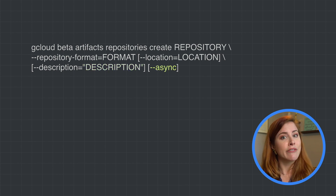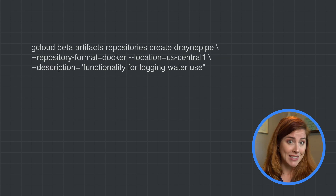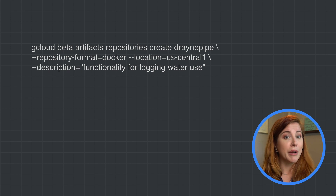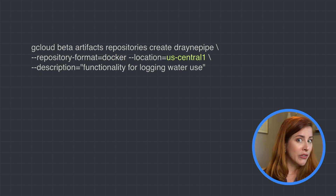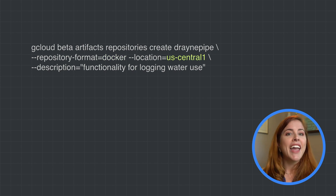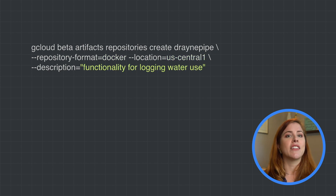Including the async flag causes the command to return immediately without waiting for the operation in progress to complete. For example, here's a command from my Drain app. My repository is called DrainPipe, it's a Docker container, the location I've chosen is US Central 1, and I've included a description so I can easily track the contents of my repositories.